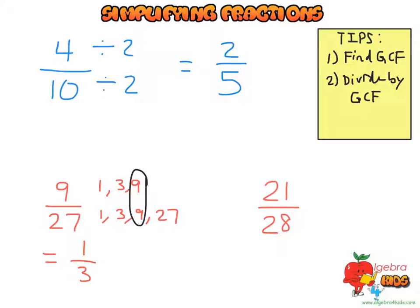And for our last one here, it's a little bit trickier to see, but it's actually multiples of 7. 1, 3, 7, 21, 1, 4, 7, 28. So greatest multiple, 7. So we can divide by 7, and we get 3 over 4.